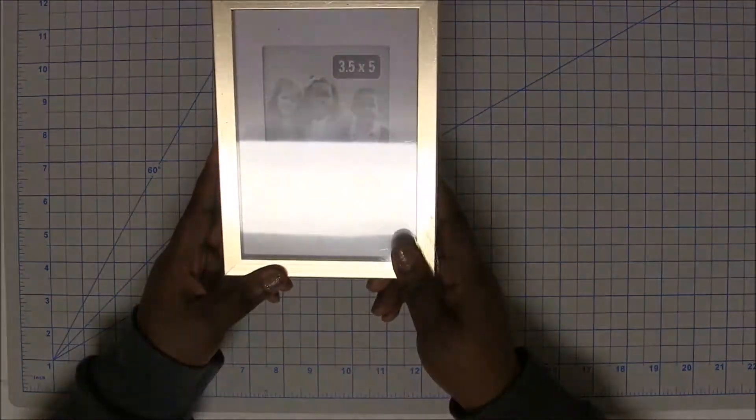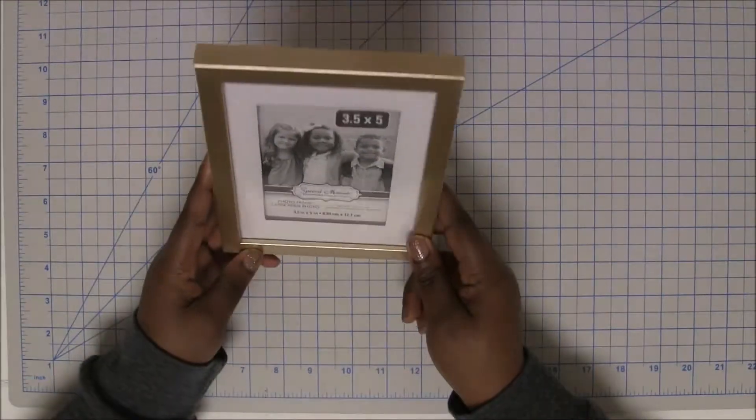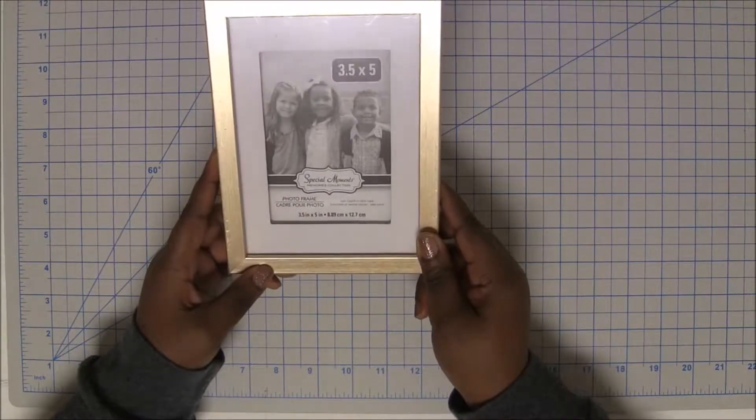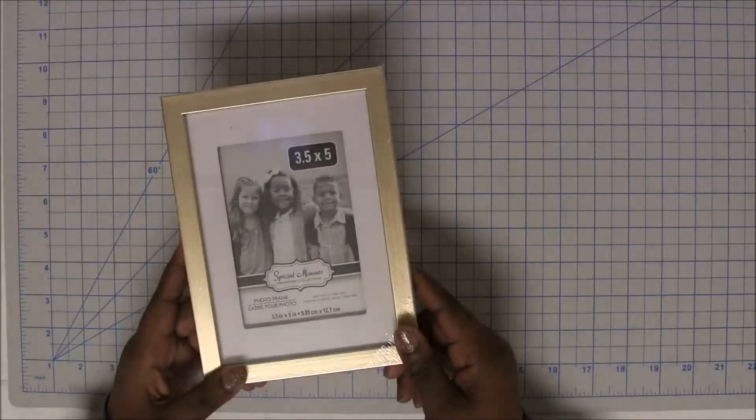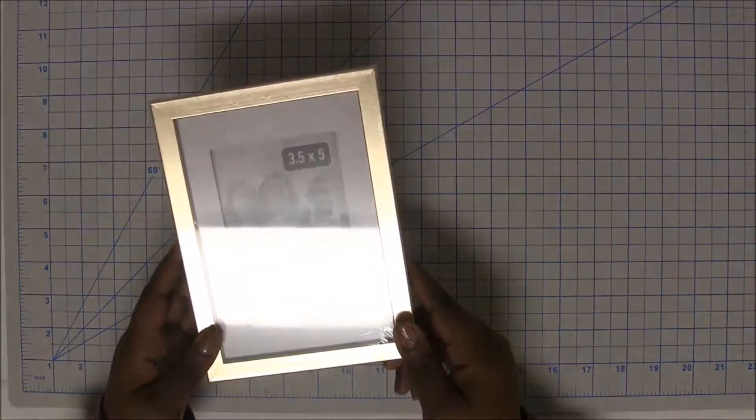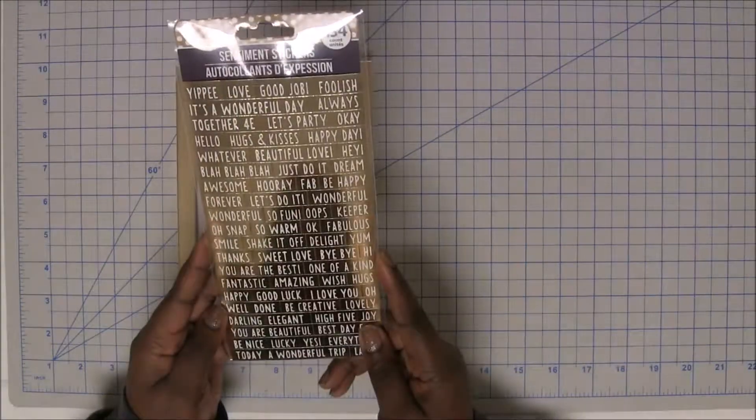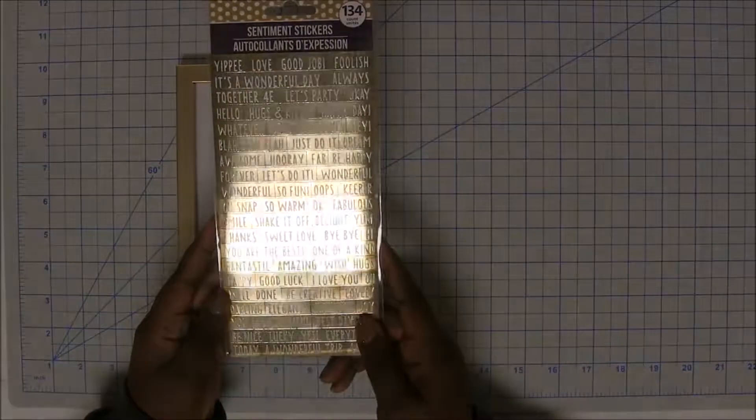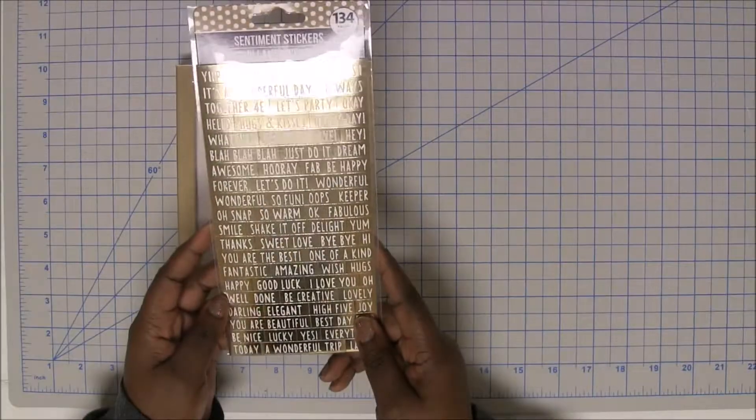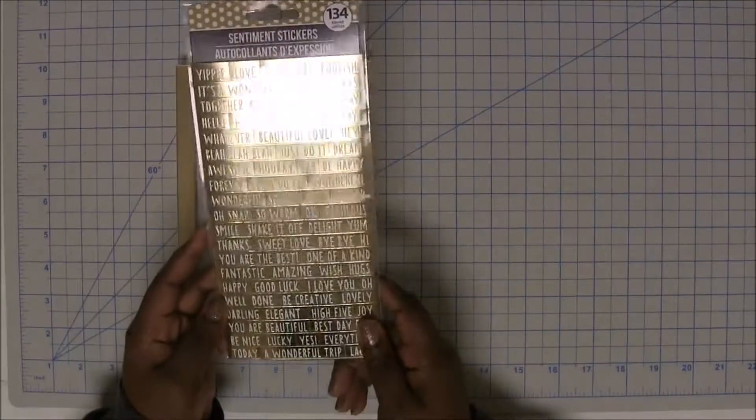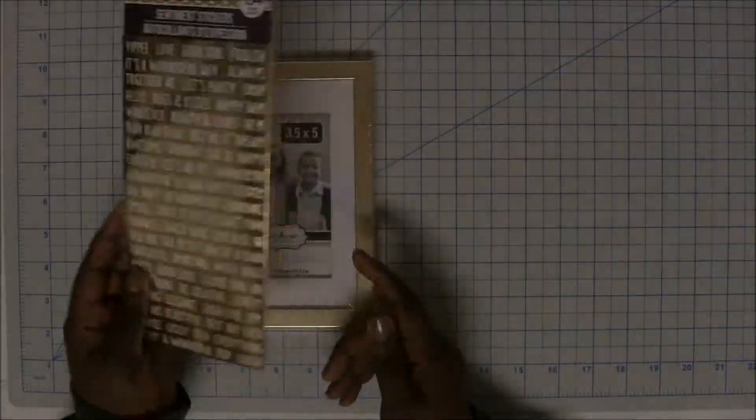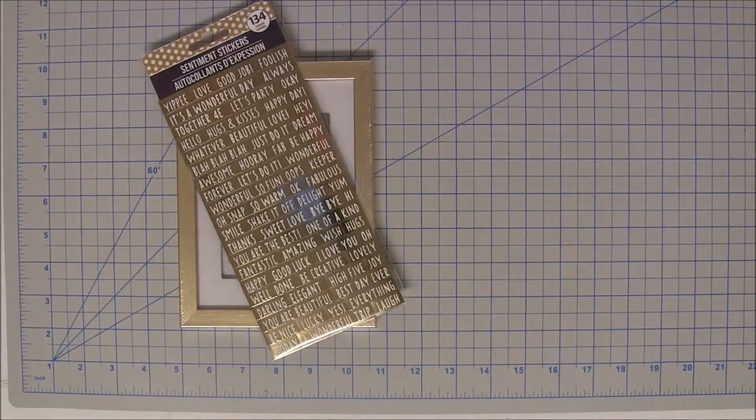We're using these gold picture frames. They come in 3.5 by 5, they also come in 5 by 7 and 4 by 6 versions. And they have these sentiment stickers which are really really cool. There's 134 stickers in this pack. There's so many words, so many good words you can use for this project. So make sure you grab one of those from the Dollar Tree.